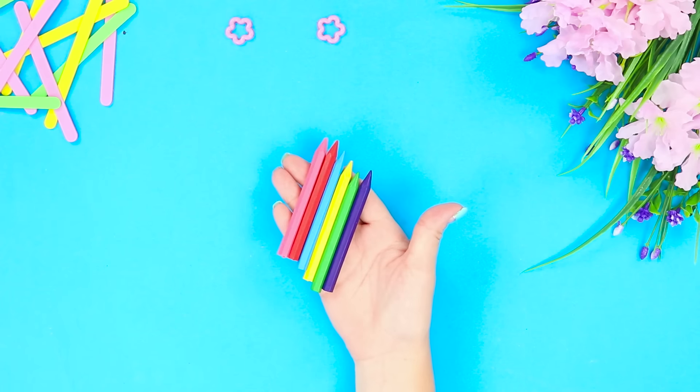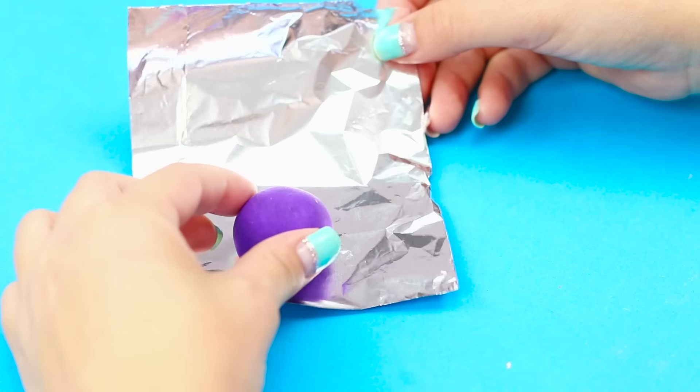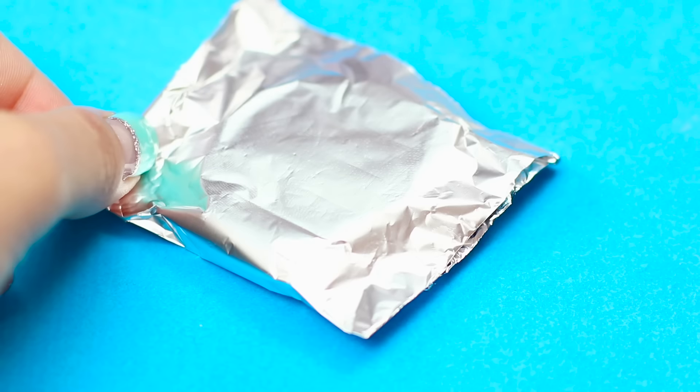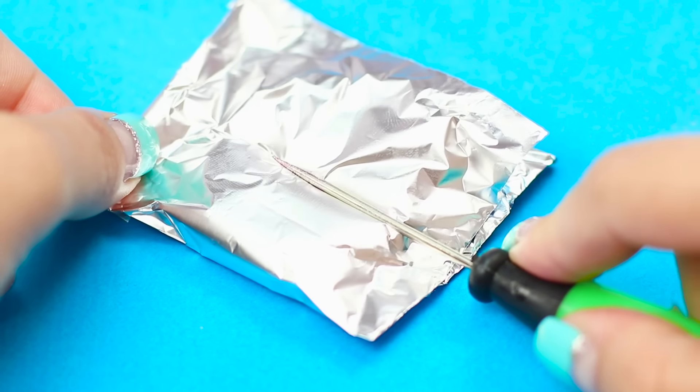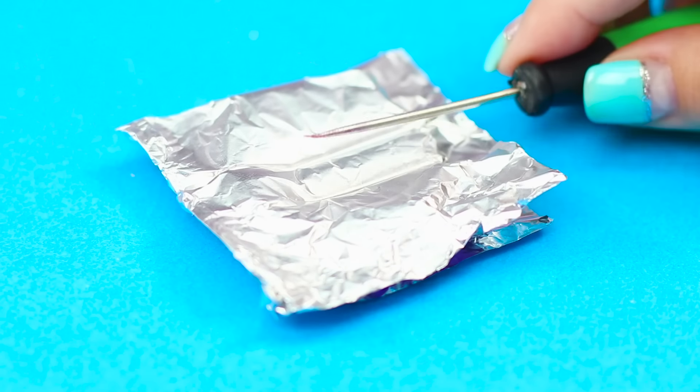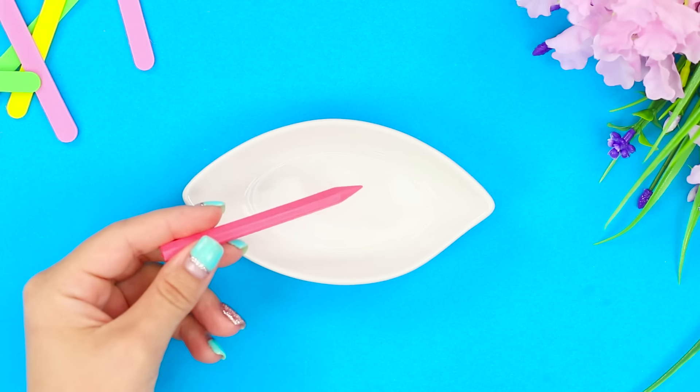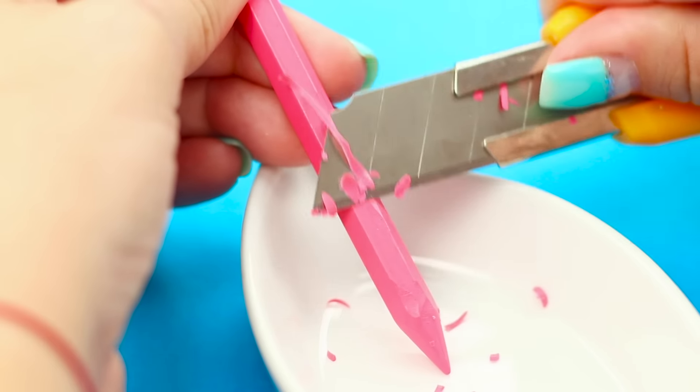Next, take crayons, light clay, and foil. Place a ball made out of clay in the foil. Crush it! Divide the piece into several parts using an awl like this. Use a utility knife to cut the crayons. Melt them!